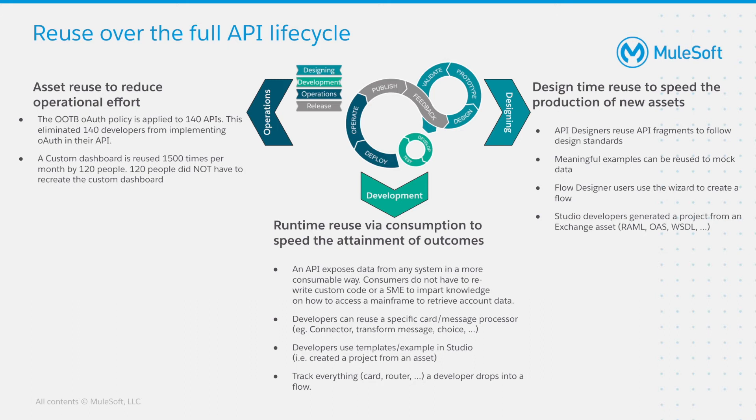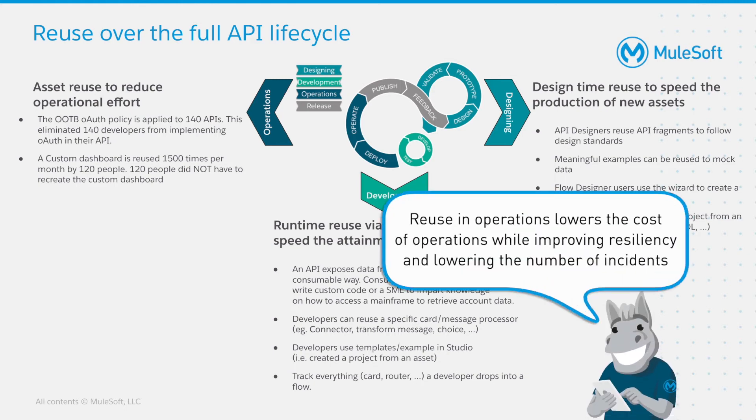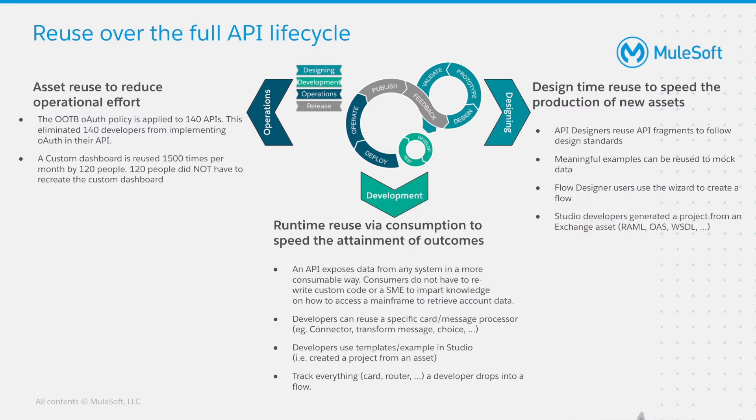The third phase is about asset reuse in order to reduce operational effort during the operations phase. A very effective example for reduction of operational effort is when users are leveraging out-of-the-box policies with API Manager.